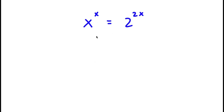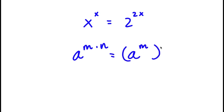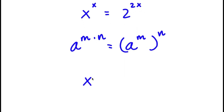If I have something in the form a to the power of m times n, this is the same thing as a to the power of m to the power of n. So 2 to the power of 2x, I'm going to rewrite that as 2 to the power of 2 to the power of x.